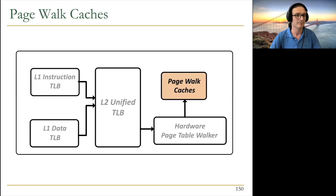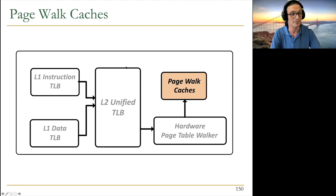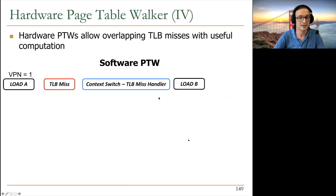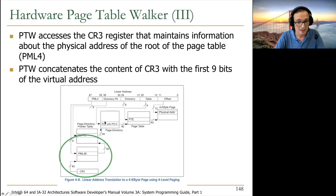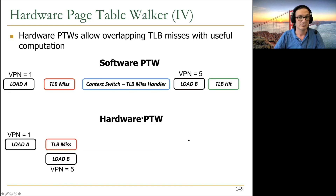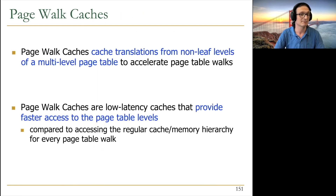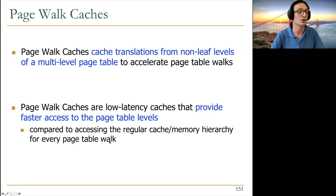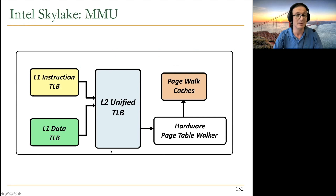Page walk caches are different from TLBs — TLBs cache the leaf-level page table entries (PTEs), while page walk caches cache intermediate levels of the multi-level page table hierarchy. The goal is to speed up the hardware page table walk so the walker doesn't have to access memory or the cache hierarchy for every intermediate level — it can access these low-latency page walk caches instead.